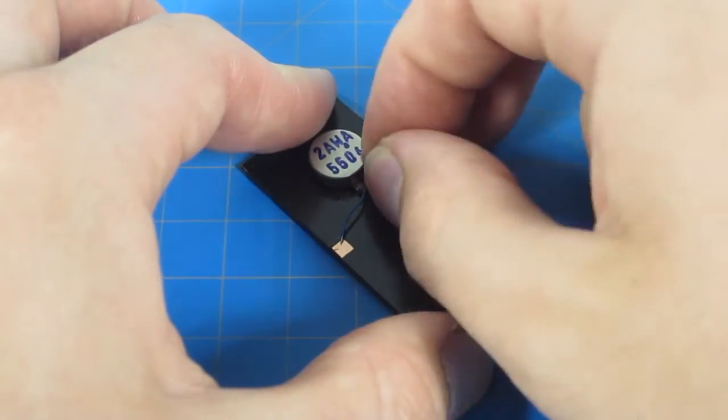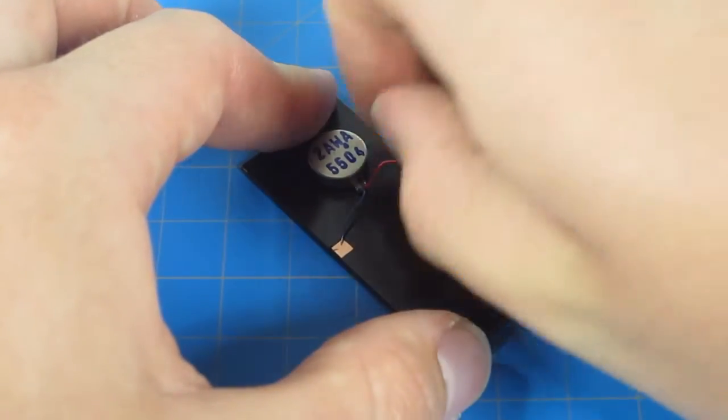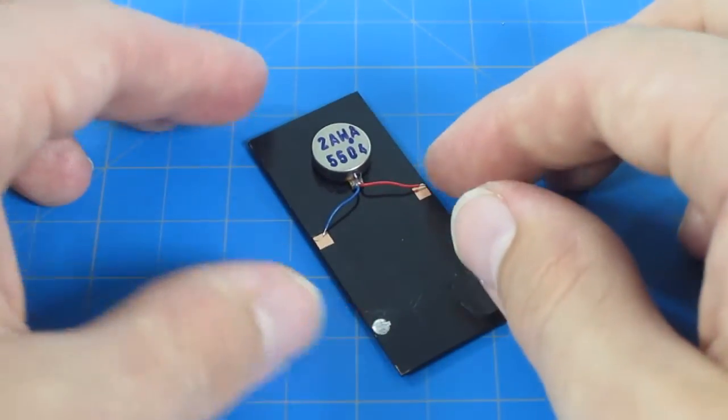For the next step, it is helpful to bend both wires into an arch. This will help them keep contact with the leads when you begin to solder.